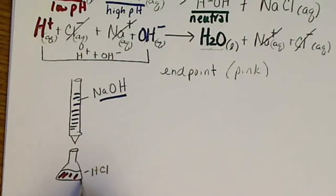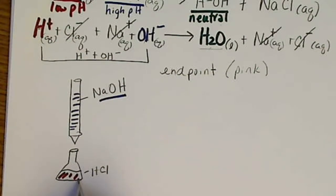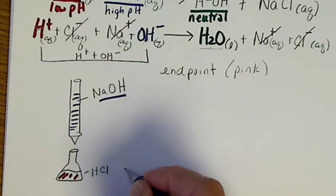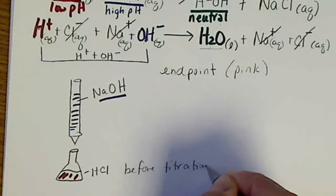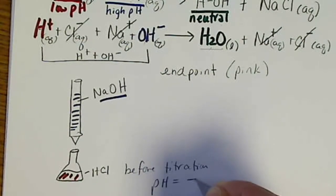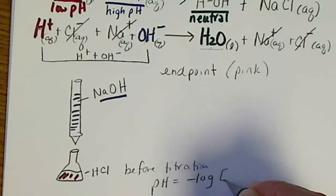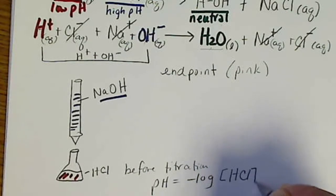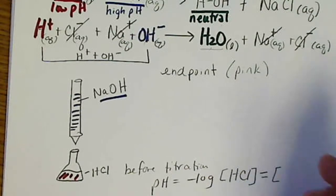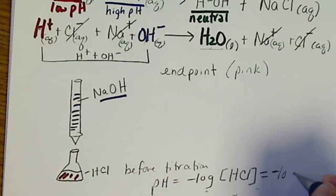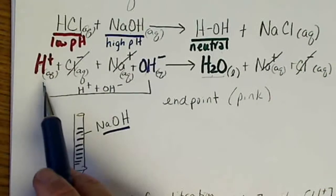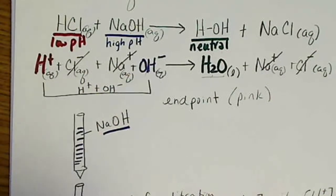Before the titration begins, the pH is equal to the negative log of the concentration of HCl, which is the same as the concentration of H⁺. That's because it's a strong acid — the H⁺ concentration equals the acid concentration.